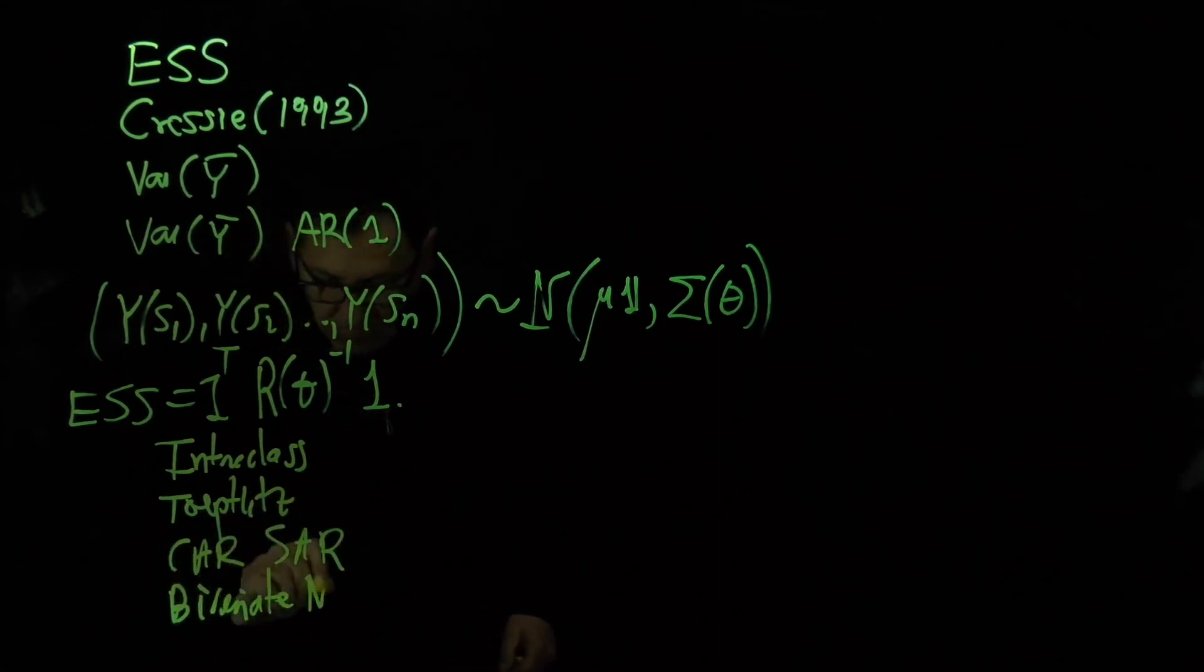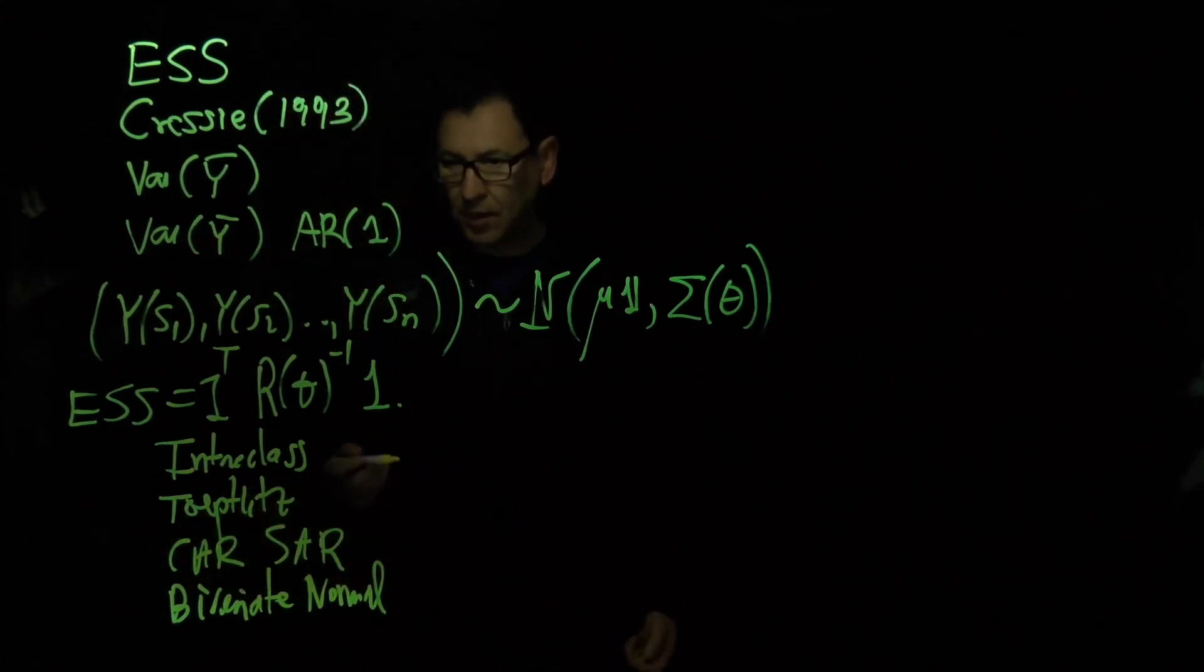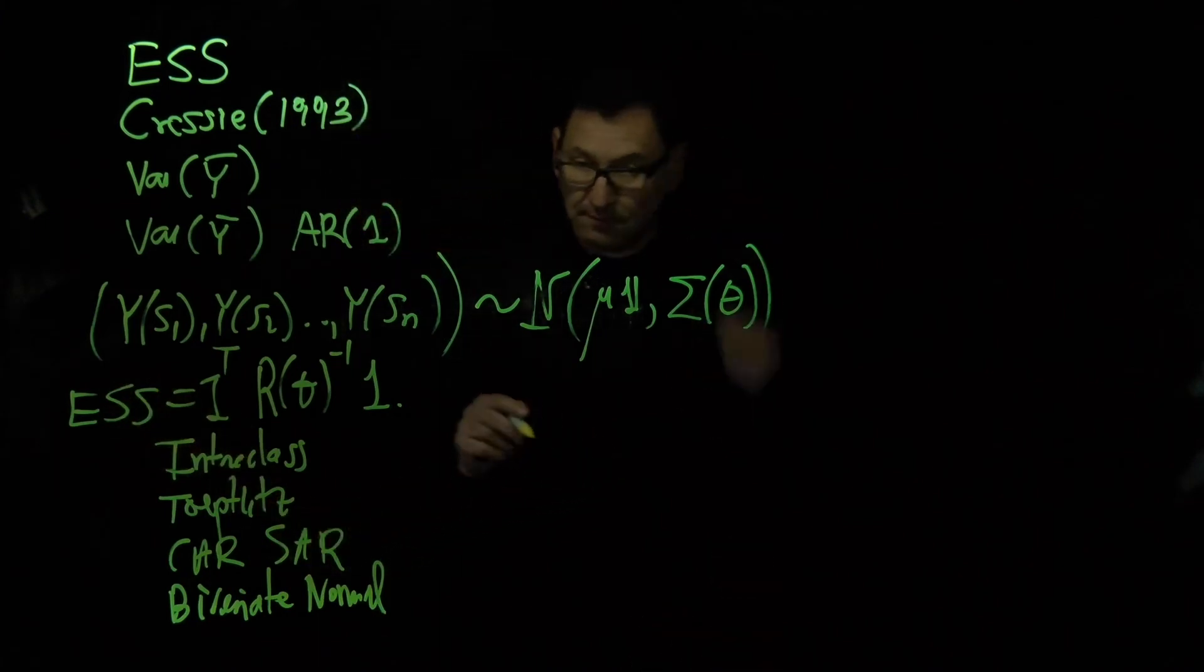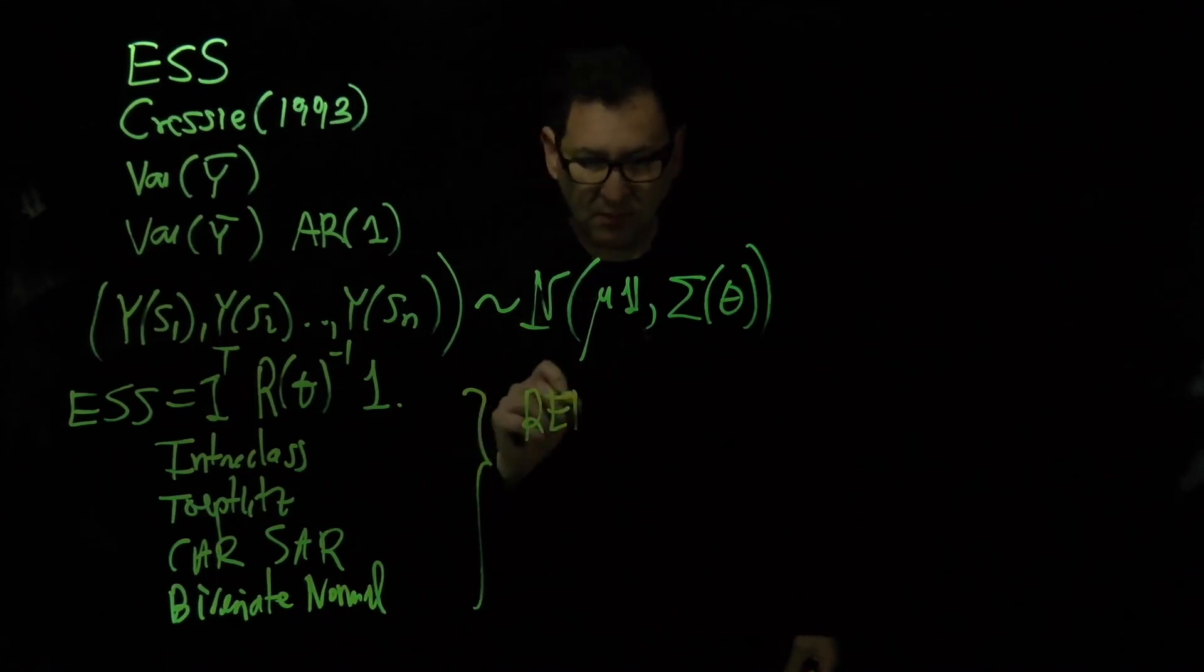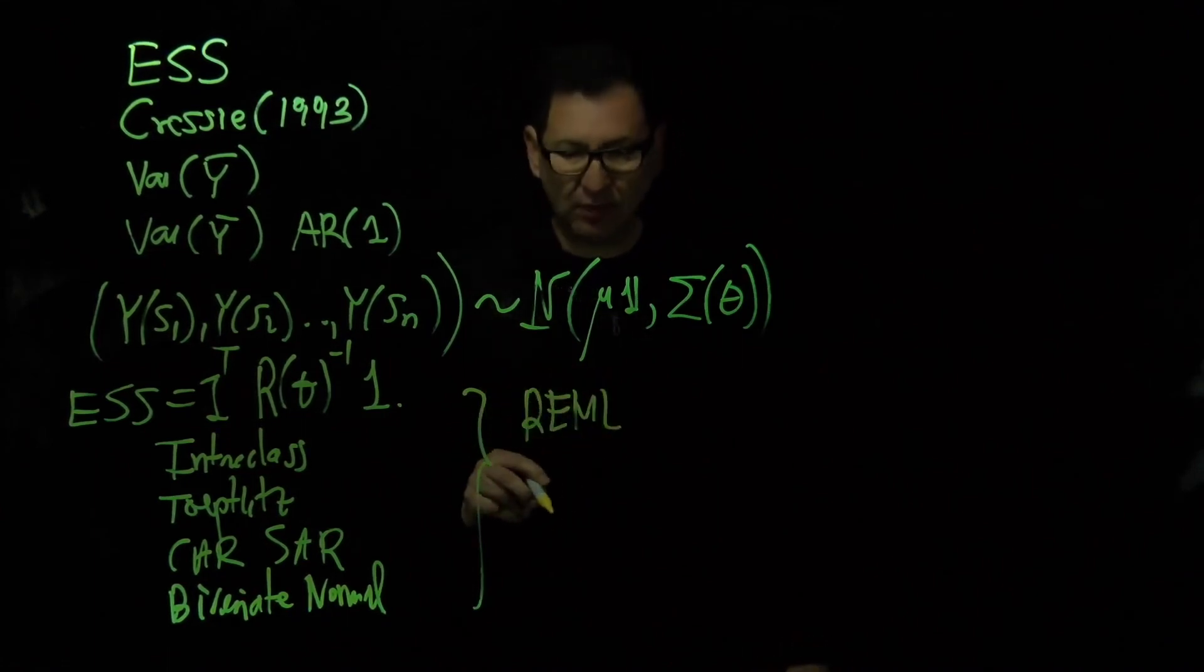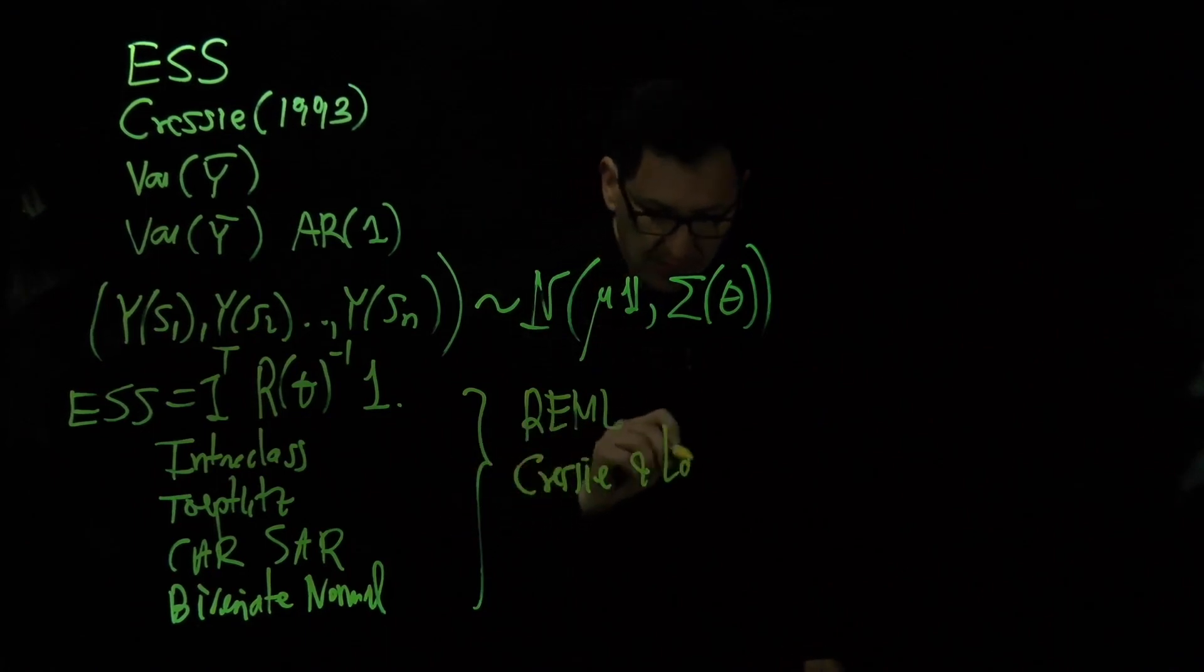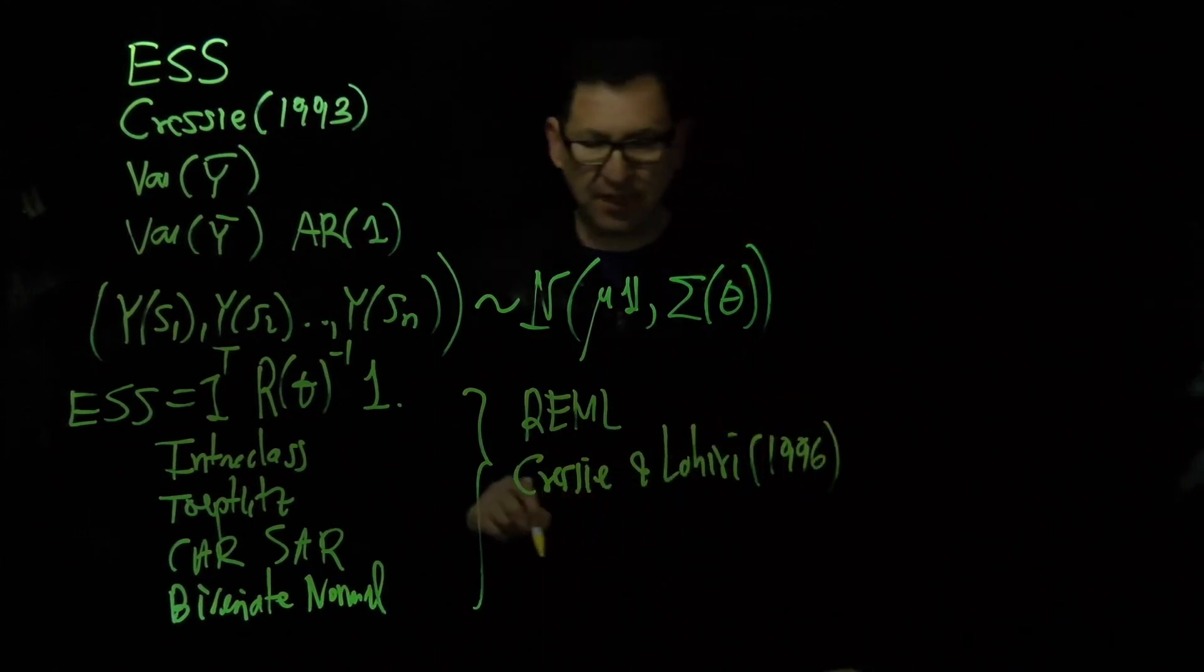And for all of them we determine how this coefficient looks like. In addition, we develop the REML estimation, which means restricted maximum likelihood estimation, based on the paper given by Cressy and Lahiri in 1996.